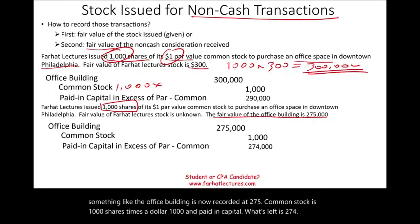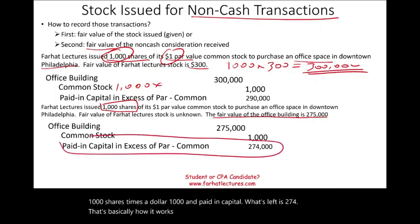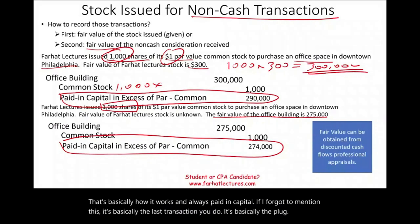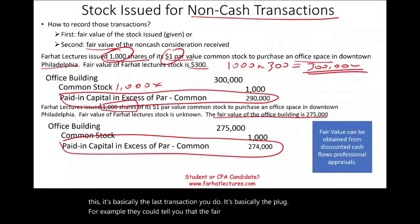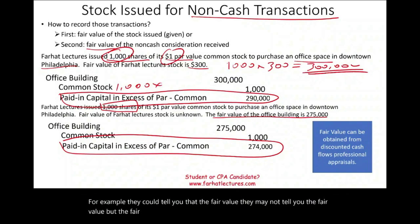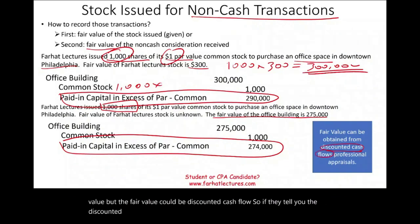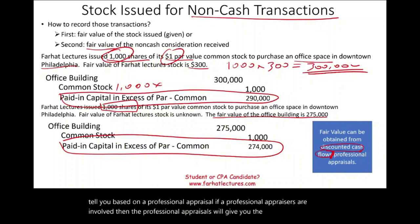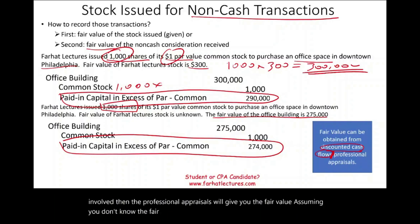Paid-in capital in excess of par is always the plug — the last number you calculate. For fair value, they may tell you discounted cash flow or a professional appraisal amount. If professional appraisers are involved, they will provide the fair value when you don't know the fair value of the stock you are issuing.